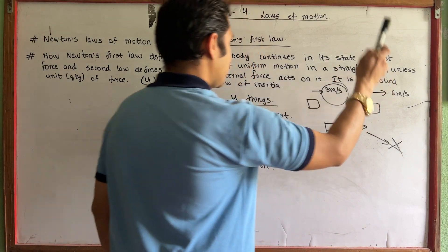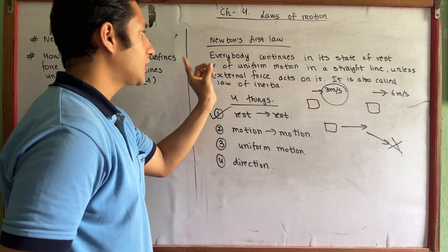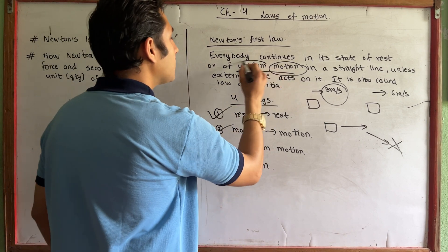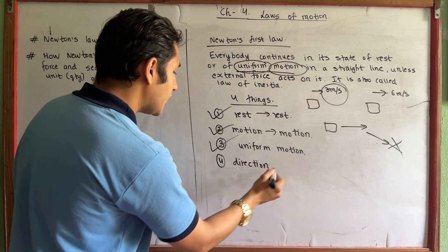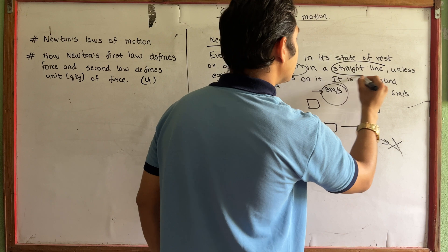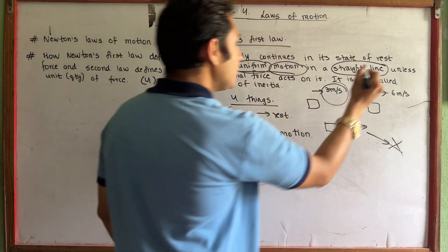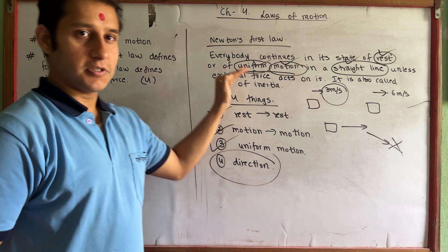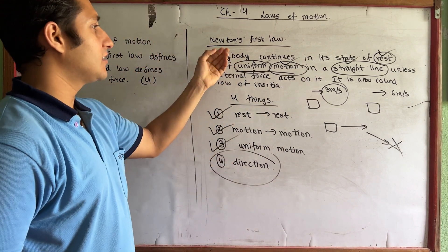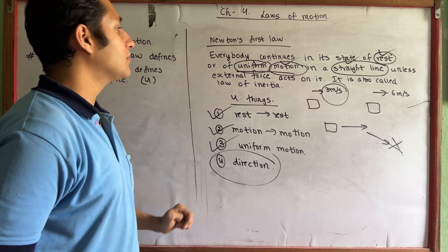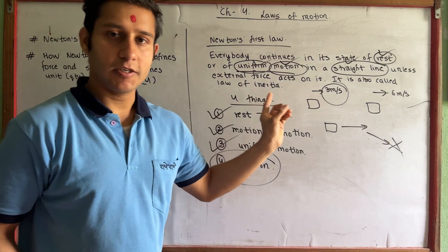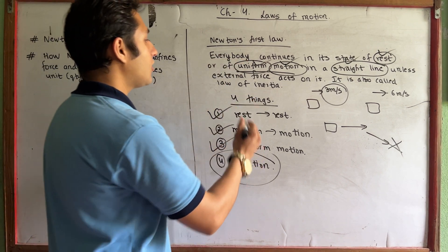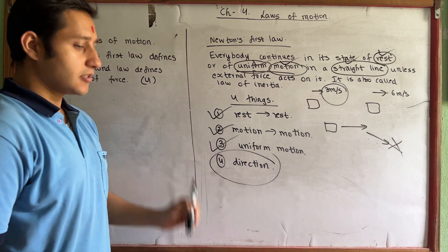So to summarize Newton's first law: every body continues in its state of rest — that's number one. Uniform motion — that's number two. Along a straight line — number three. And the direction is straight — number four. Rest, motion, uniform, and straight line. The law of inertia needs more study, so let's move on to the second law.